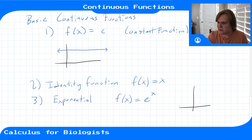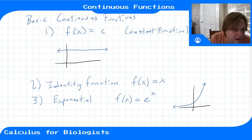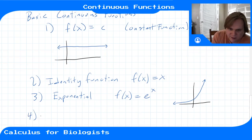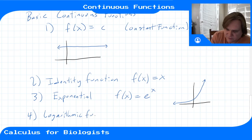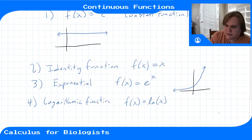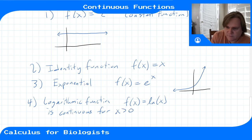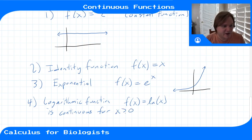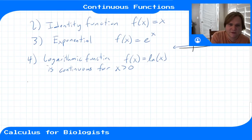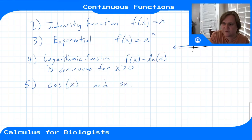Some other basic continuous functions: the exponential function f(x) equals b to the x is continuous — you can draw that curve without lifting your pencil. The logarithmic function f(x) equals ln(x) is continuous on its domain, so only for positive x, because for zero and negative x it's not defined and thus not continuous there. And the basic trigonometric functions cosine(x) and sine(x) are continuous.